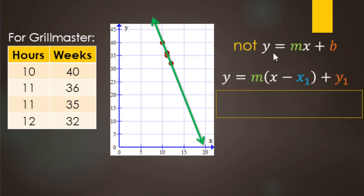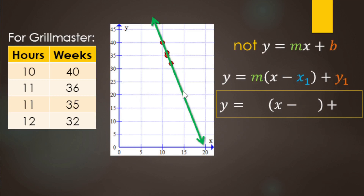For this example, we can't use slope intercept form because the y-intercept is way up off the screen. So we have to use point slope form. First find the slope. There are two nice points on the line. The y-axis goes by fives, so we count down: 5, 10, 15, 20 — the rise is negative 20. The x-axis also goes by fives, so the run is 5.